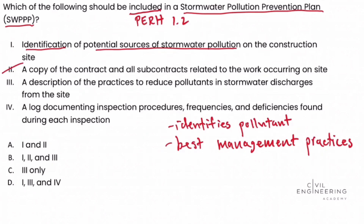Answer choice three — we touched on it earlier. The pollution prevention plan for stormwater should include best management practices or techniques that would reduce pollutants in the stormwater discharges from the site and reduce the risk of contamination to the surrounding waterways. So option three is a valid choice.